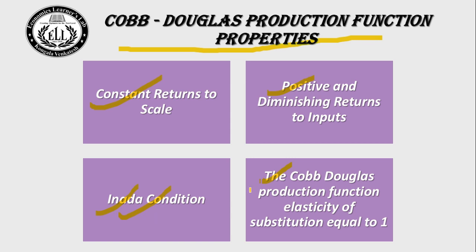The fourth property of the Cobb-Douglas production function is that the elasticity of substitution equals 1. These four properties can be proven both mathematically and graphically, but for the NET exam, just having an understanding of the properties is sufficient.